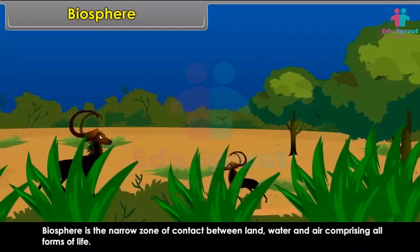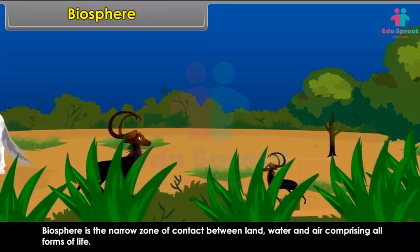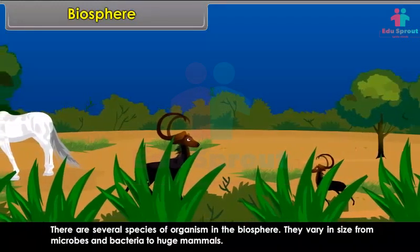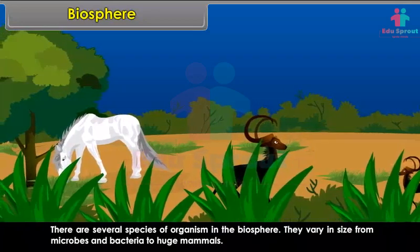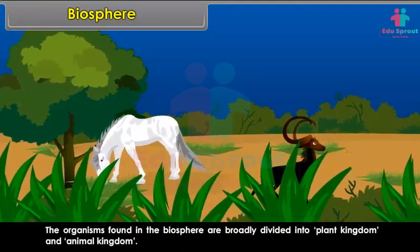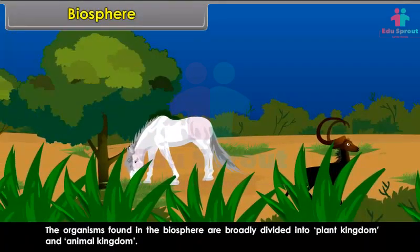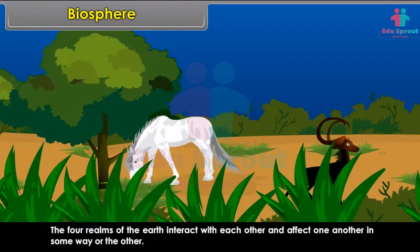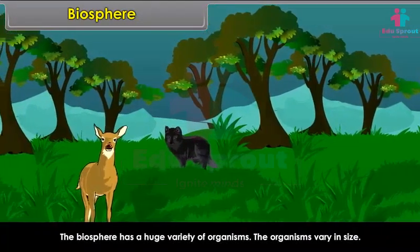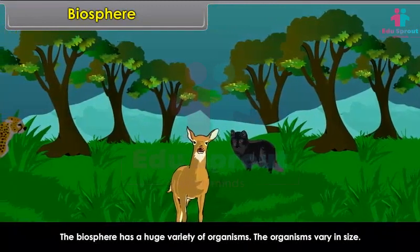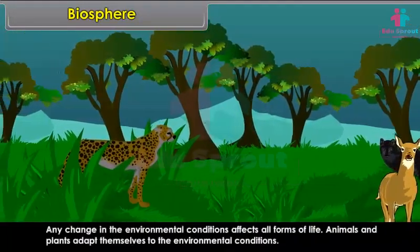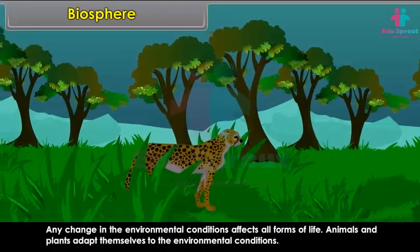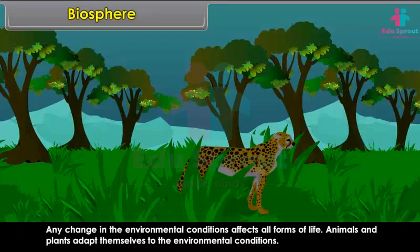The Biosphere is the narrow zone of contact between land, water and air, comprising all forms of life. There are several species of organisms in the biosphere, varying in size from microbes and bacteria to huge mammals. The organisms are broadly divided into the plant kingdom and the animal kingdom. The biosphere has a huge variety of organisms — from the smallest grass to the tallest tree. Any change in environmental conditions affects all forms of life, and animals and plants adapt themselves to those conditions.